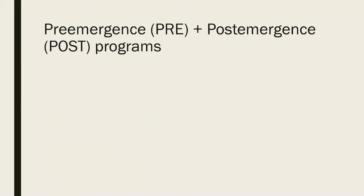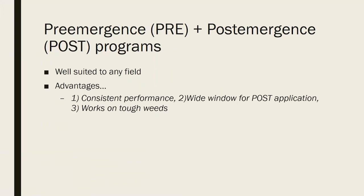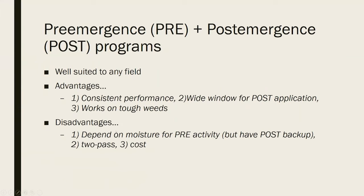Another alternative is the pre plus post-emergent program — two applications. This is going to be suited to any field. You have the advantages of consistent performance with a very wide window of application for your post-emergent spray. It's going to work on tough weeds. The disadvantage is you do have to get moisture for your pre-emergent herbicide, but you have a post-emergent herbicide in your quiver to go out and salvage any problems that may emerge. It's a two-pass system, so it takes more time and two sprayer passes will cost a little bit more.